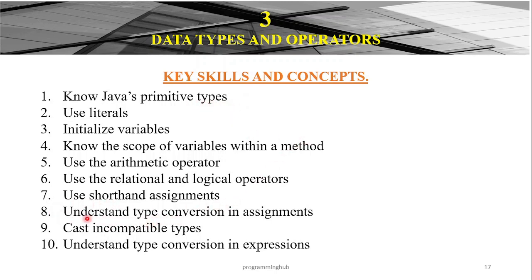We shall also look at the concept of type conversion. We shall look at the various primitive data types and the complex data types, and see how you convert between the various data types we shall have covered. Then there is what we call casting of incompatible data types. Understand that this builds on your understanding of data types, variables, arithmetic operators, and relational operators — and then we shall look at how you cast into different data types.